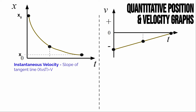Let's start with instantaneous velocity. If we choose some initial time, some middle time, and some final time, how do we determine the velocity the object is moving at that instant from a quantitative graph? Remember, the slope of a position-time graph is the velocity. So to find the slope at those three times, we draw tangent lines. The slope of each tangent line gives the instantaneous velocity at that moment — and if the slope appears to be about zero, the instantaneous velocity is about zero.